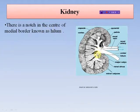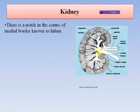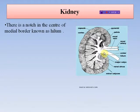There is a notch in the center of the medial border known as the hilum. Each kidney has a fissure or hilum on the concave medial side. The hilum is the passage for blood vessels, lymph vessels, nerves, and the ureter. Blood laden with waste products is brought by the renal artery and filtered blood is taken by the renal vein. The hilum is connected internally to a cavity named the renal sinus.